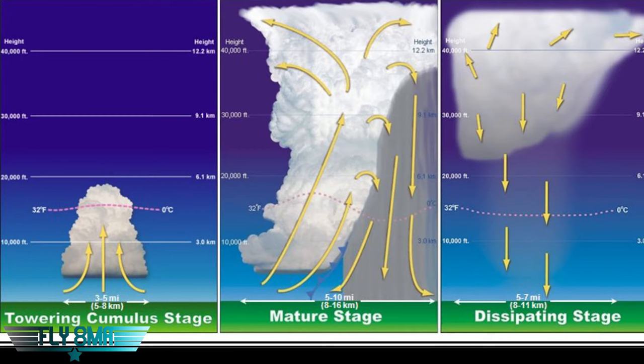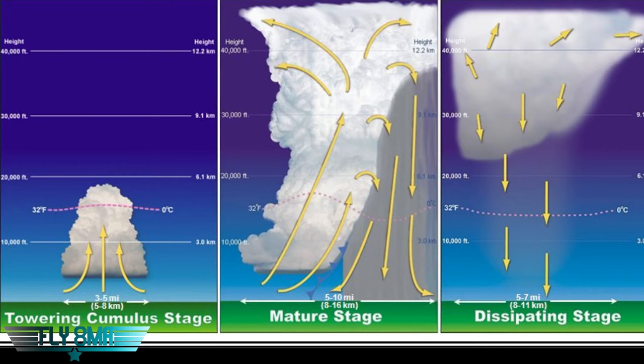The next stage is the mature stage. This is when rain begins to fall at the surface. Rain falling is going to drag some air down with it, so you get that cool air falling to the bottom of the cloud. You now have updrafts and some downdrafts during the mature stage. The mature stage is characterized by the beginning of precipitation at the surface — as soon as precipitation reaches the surface, that would be the mature stage.